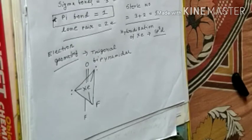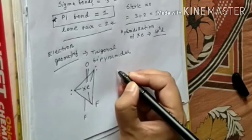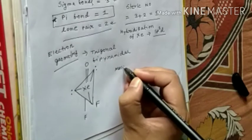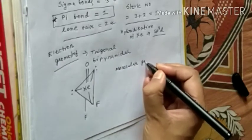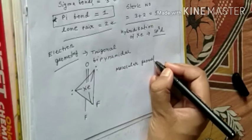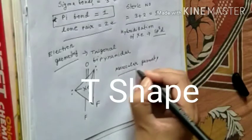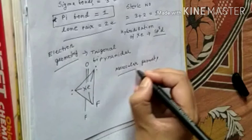So the molecular geometry is T-shaped. By this way, you can find the molecular geometry.